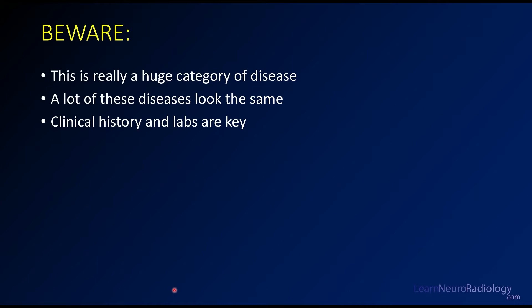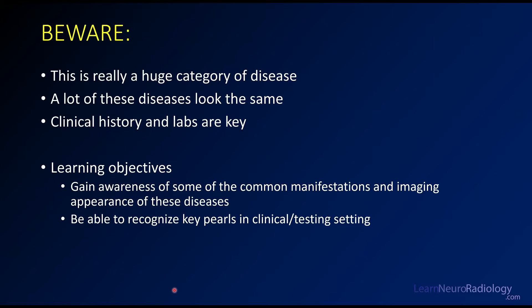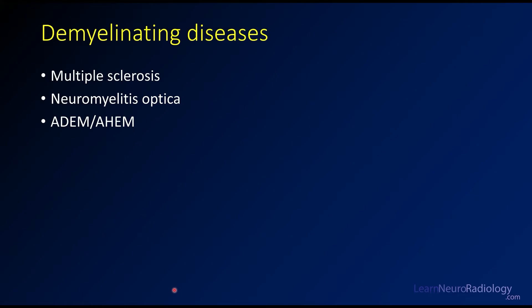Now I want to give you a warning. This concept of CNS inflammatory and autoimmune diseases is really a huge category of diseases. Many of them look the same, and the clinical history and labs are really going to be what sets them apart, so you may not be able to tell based on imaging alone. My other warning is this is not intended to be comprehensive — this is not going to cover every autoimmune and inflammatory disease. This will hopefully give you coverage of the most common diseases and the key pearls for clinical testing.